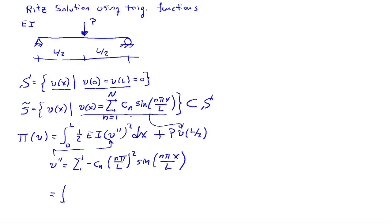The second derivative of v of x is going to be the summation of minus cn n pi over l squared times the sine of n pi x over l, so we're going to plug that into there, and then we will use this expression inside the v there. So we can expand out a little bit. Integral 0 to l, 1 half eI, the summation of cn n pi over l squared sin n pi x over l,